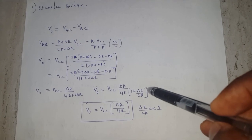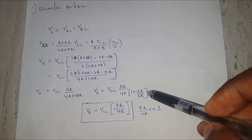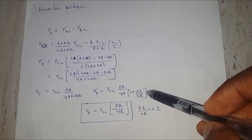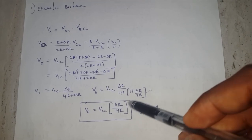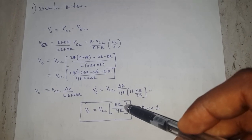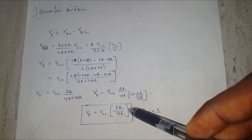The final quarter bridge output equation is: V_out = VCC × (ΔR / 4R) × 1/(1 + ΔR/2R). The term (1 + ΔR/2R) in the denominator is the nonlinear element present in the quarter bridge output voltage. If you neglect this nonlinear term, then V_out = VCC × ΔR / 4R.